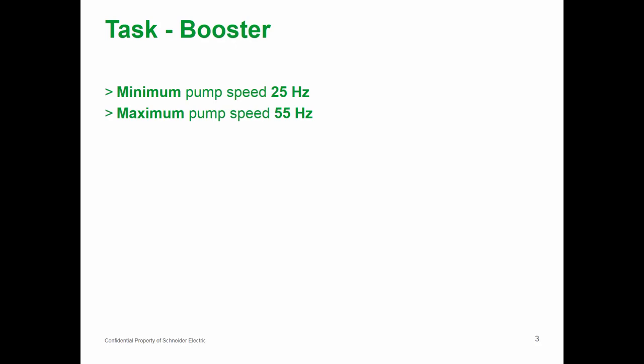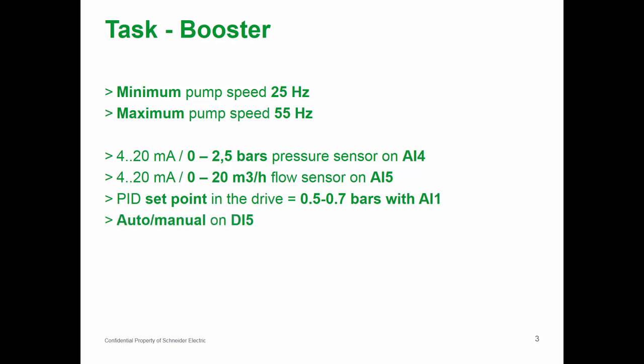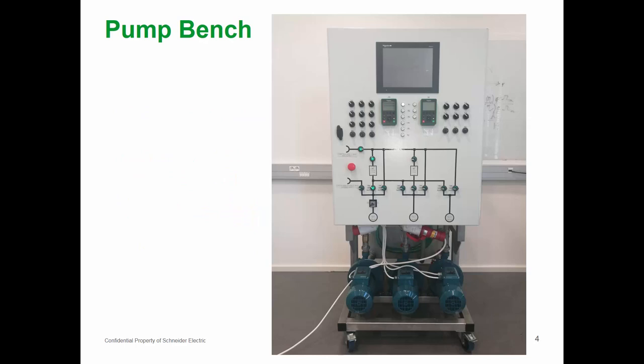Our task requires setting up parameters of our pump: minimum speed of 25 Hz and maximum speed of 55 Hz. We also need to set up our pressure sensor and flow sensor, put in a PID setpoint — everything up to now set by analog inputs — then set up auto/manual with a logical input, and use another analog input for speed setpoint in manual mode.